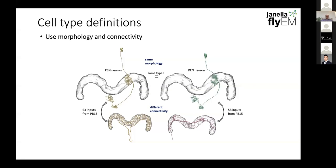Connectivity is very useful because morphology alone can be very ambiguous in some cases. Here's an example of two neurons — this PEN neuron and another PEN neuron — that look morphologically very similar. They innervate regions of the protocerebral bridge very similarly. Yet if you look at their connectivity, the inputs and outputs that they have are very different. The inputs they receive are from very different neurons. This is something we can see very easily using the connectomic information.